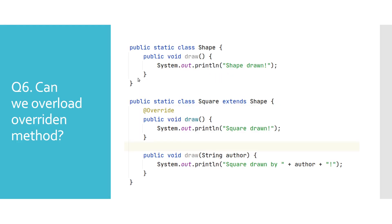Can we overload overridden methods? Overridden methods can be overloaded like any other methods, if we apply the same rules mentioned in the first question. As displayed here, we have two overloaded draw methods in the Square class, where one of them overrides the method from the superclass Shape.